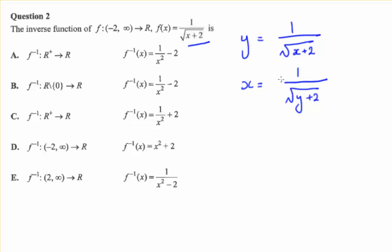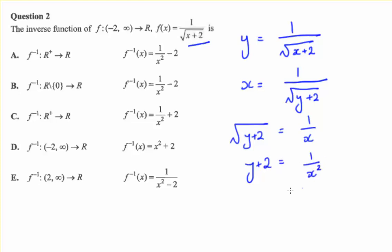Now we need to make y the subject, so let's flip these around so we get y plus 2 equals 1 on x. Let's square both sides so we get y plus 2 equals 1 on x squared, and then y equals 1 on x squared minus 2.